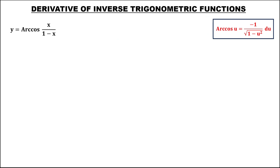For this given, for the inverse cosine, we have u is x over 1 minus x. To find the derivative, using the quotient rule — so this is v times the derivative of u, then minus u times the derivative of v, over v squared.